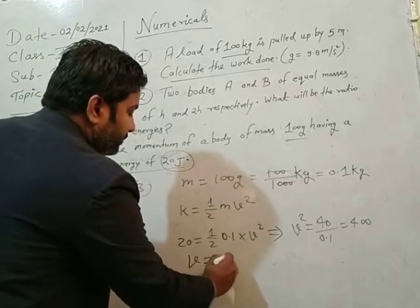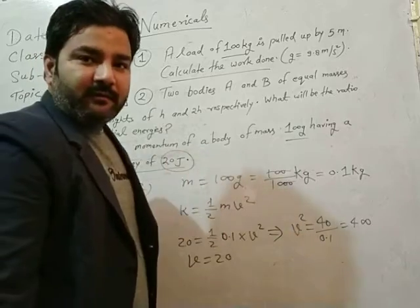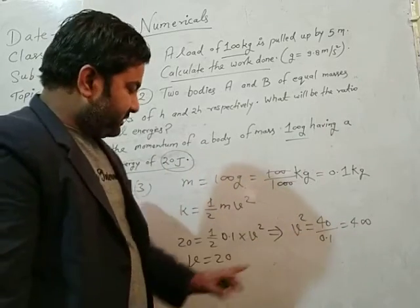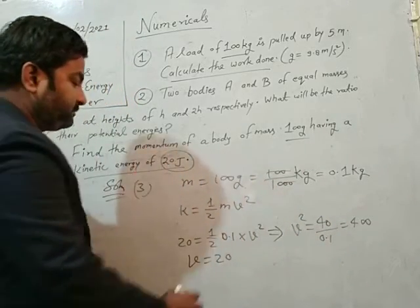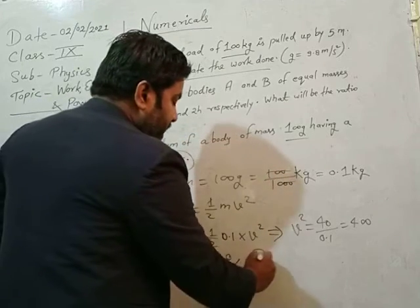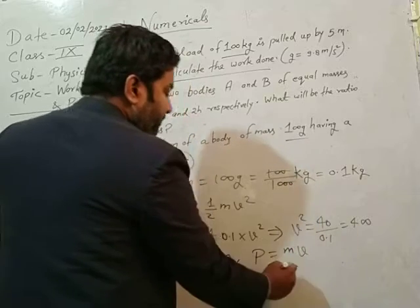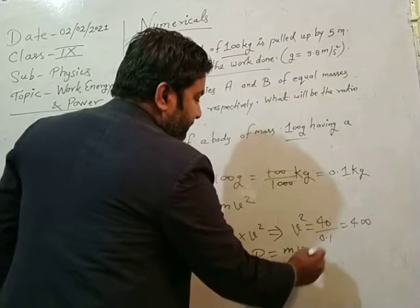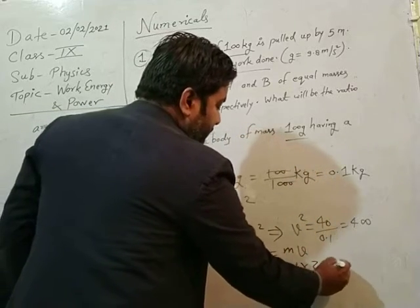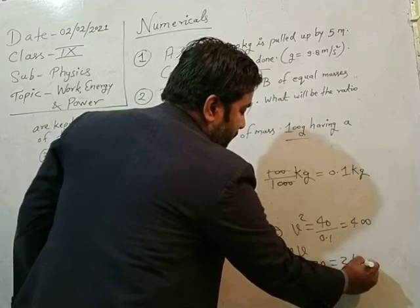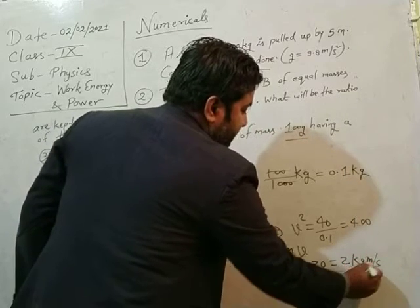So velocity equal to 20, we got 20 square is 400, so square root taken, then v is equal to 20. So momentum, then momentum p is equal to mv. m here is 0.1 and v is 20, that is equal to 2 kg meter per second.